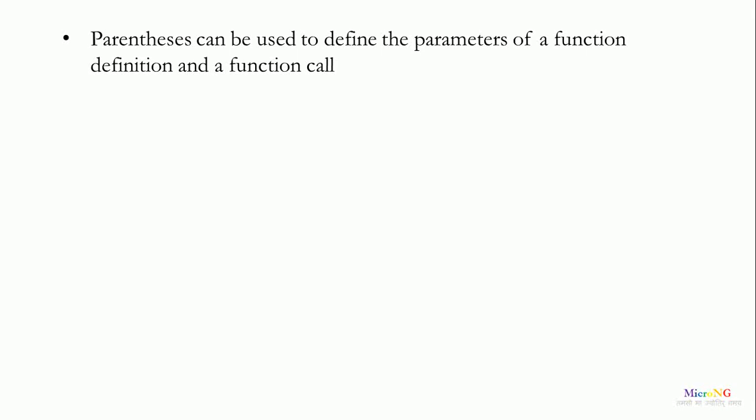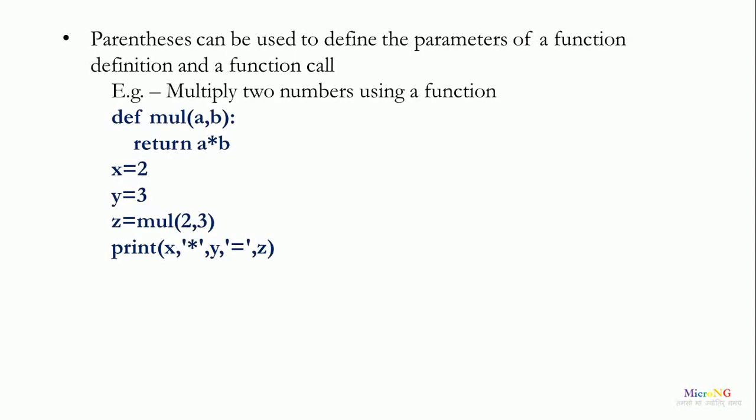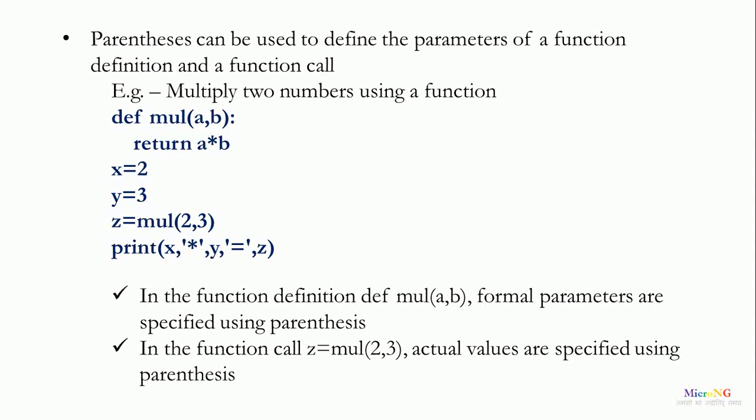Parenthesis can be used to define the parameters of a function definition and a function call. For example, a function for multiplying two numbers: the function name is mul and the parameters a and b are written inside the parenthesis. Similarly, during the function call, we call mul and within the parenthesis we write the actual values as 2 and 3, so parenthesis is used for passing actual values as well.